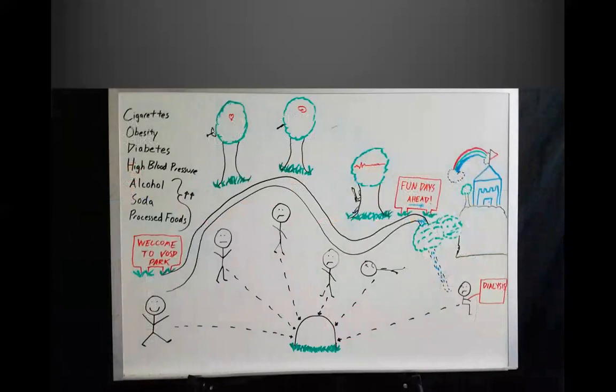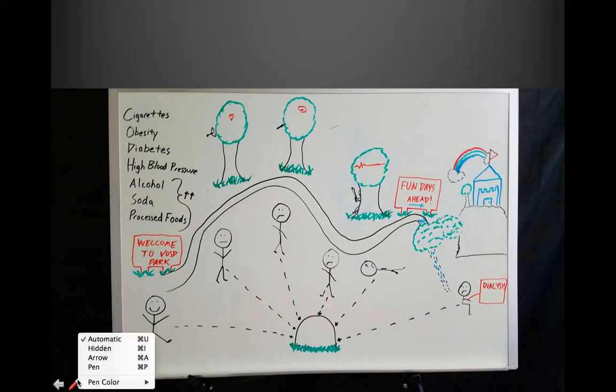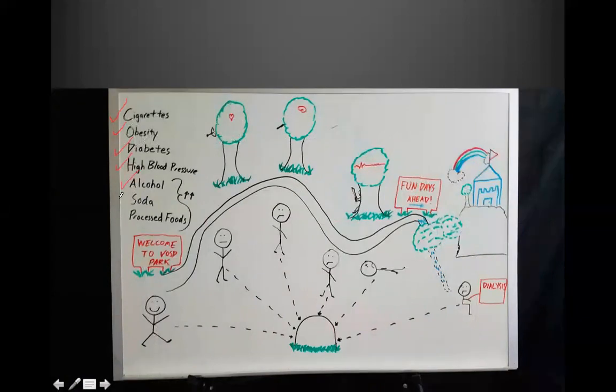If you look on the left here, it has cigarettes, obesity, diabetes, high blood pressure, alcohol, soda, processed foods. Let me get my red pen. I can do some outlining for you. So you see cigarettes, obesity, diabetes, high blood pressure, alcohol, soda, processed foods.